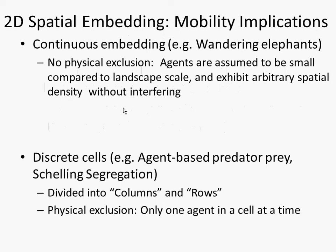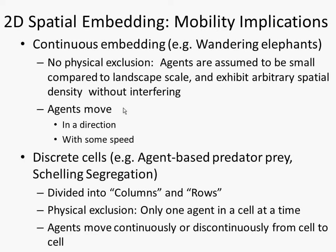With continuous embedding — similar to the wandering elephants model included with AnyLogic — there's no physical exclusion; two agents can pass in space and AnyLogic doesn't automatically detect collision. With discrete cells, you divide space into columns and rows with one or zero agents per cell. We're going to focus on continuous space: agents moving in a direction with some speed. AnyLogic provides methods like isMoving(), getTargetX(), getTargetY(), moveTo(x,y), setVelocity(), setX(), setY(), and setRotation().